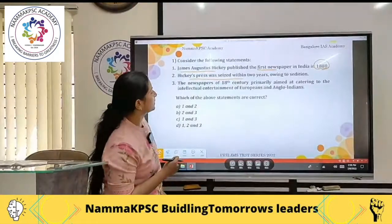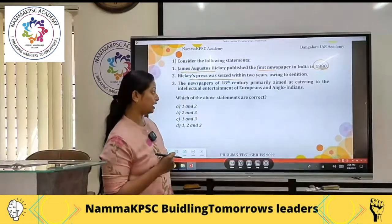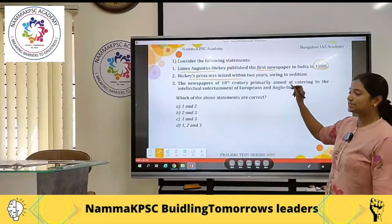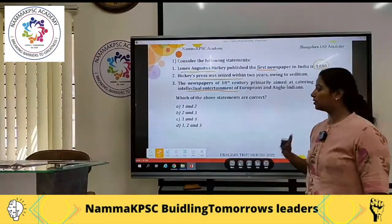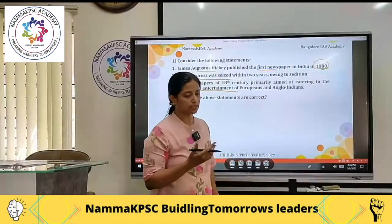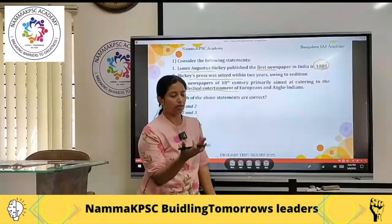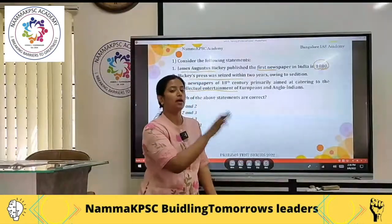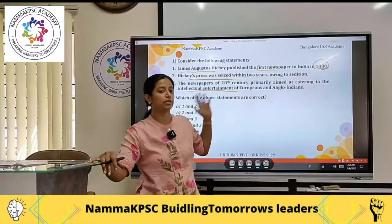The third statement is: the newspapers of the 18th century primarily aimed at catering to the intellectual entertainment of Europeans and Anglo-Indians. This is not a fact — it is a little analytical statement. What does it say? It's aimed at catering to the intellectual entertainment of Europeans and Anglo-Indians, meaning people who are not of Indian origin — those who came here as settlers, traders, or government servants.